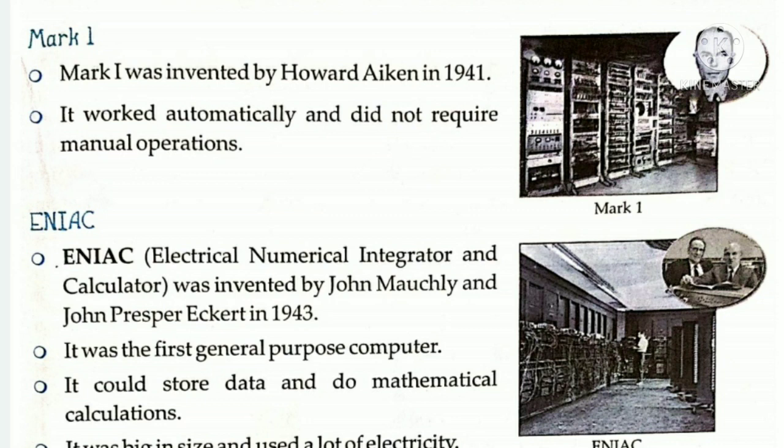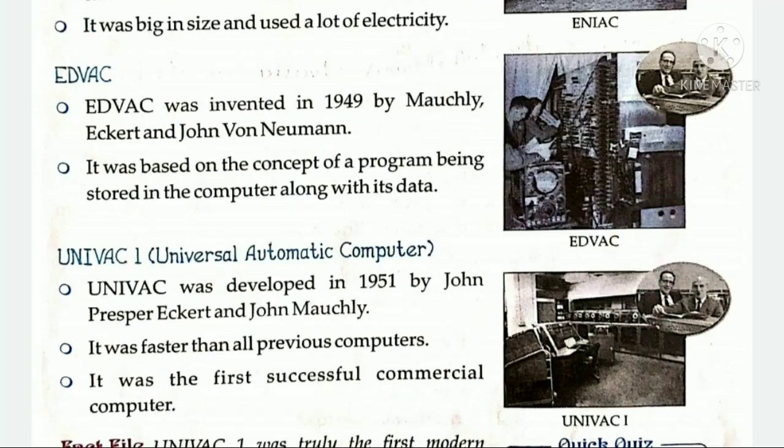ENIAC का full form होता है Electrical Numerical Integrator and Calculator. ENIAC को John Mosley और John Presper Eckert ने 1943 में invent किया था. यह पहला general purpose computer था. इसमें data को store कर सकते थे और mathematical calculations कर सकते थे. यह size में बड़ा था और बहुत ज़्यादा electricity consume करता था. इससे इतनी ज़्यादा heat produce होती थी कि अकसर computer खराब हो जाया करते थे.